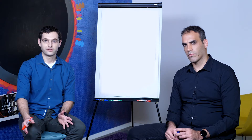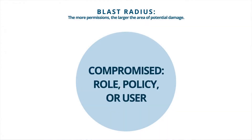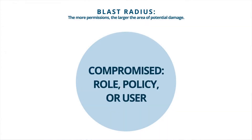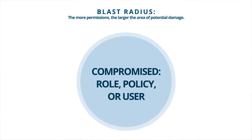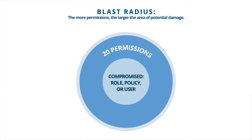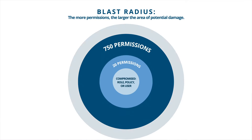Did you know that there are more than 5,000 different API calls in each of the major cloud providers — AWS, Azure, and GCP? And for each of these API calls, there is the corresponding permission that can be assigned to cloud entities.